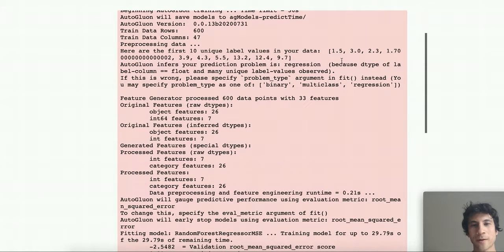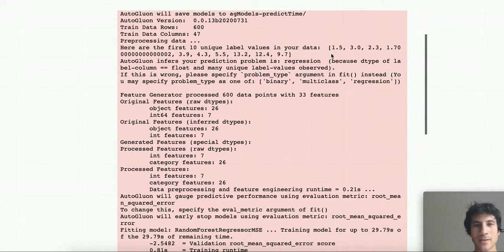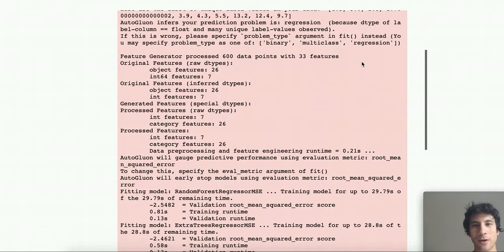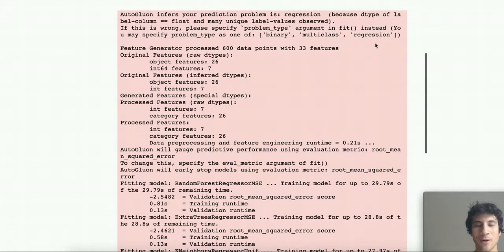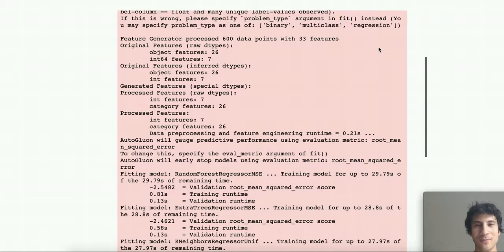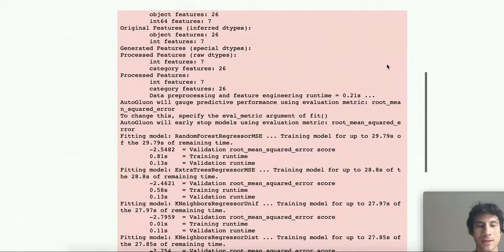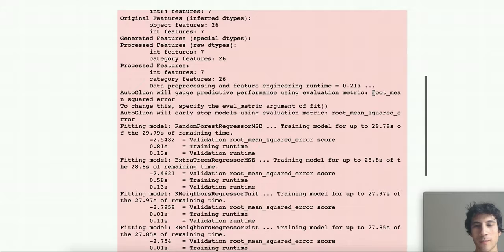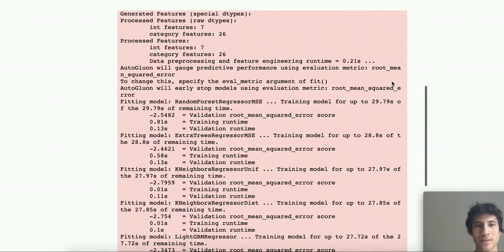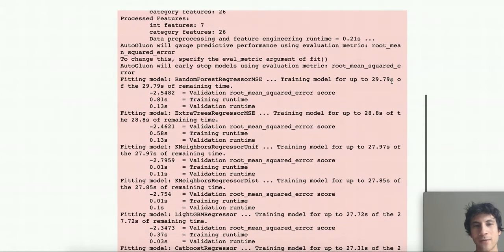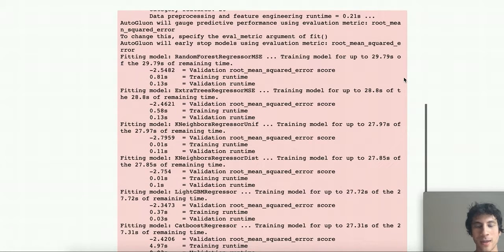So again, AutoGluon first looks at the label values in the target column, and it shows the first 10 of these values look like this. And AutoGluon then decides that the prediction problem should be regression because these are floating point values and there's many unique values observed in this target column. It tells you you can override this guess, which you probably should if you already know what kind of prediction problem you have. Next, it preprocesses the data and decides that it's going to evaluate performance using the default metric for regression, which in AutoGluon is root mean squared error. Then it starts, it splits the data into training and validation sets, and will start training various models on the training set and reporting some internal metrics on the validation sets.